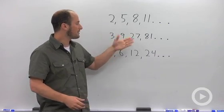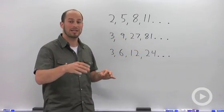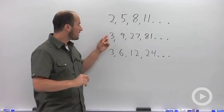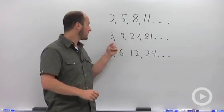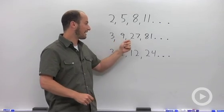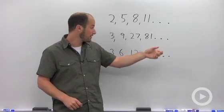The next one goes 3, 9, 27, and 81. There's a couple of ways we could break this one down. The way that I intended it to be done is powers of 3. So we have 3 to the first, 3 to the second, 3 to the third, 3 to the fourth, and so on. So the next term would be 3 to the fifth.